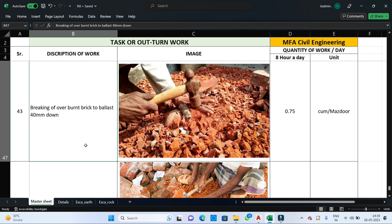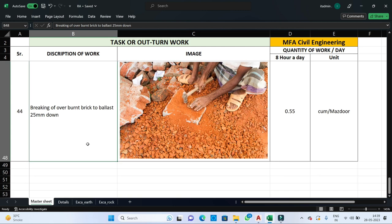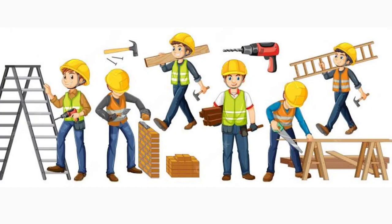In waterproofing, bricks or ballast are used for filling purposes. For breaking over-burnt bricks to ballast 40 mm down, mazdoors are utilized — one mazdoor can execute 0.75 cubic meters per day. When bricks need to be reduced further to 25 mm down, one mazdoor can complete 0.55 cubic meters per day. By multiplying the outturn value with the total quantity of work to be executed, the total number of workers required can be calculated for rate analysis purposes.